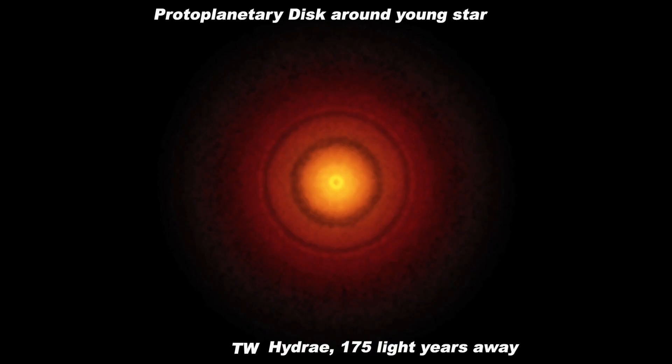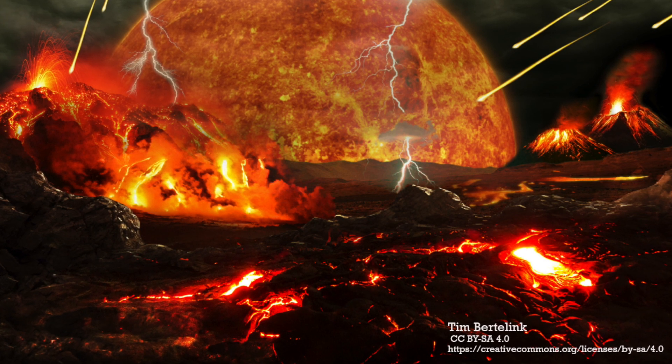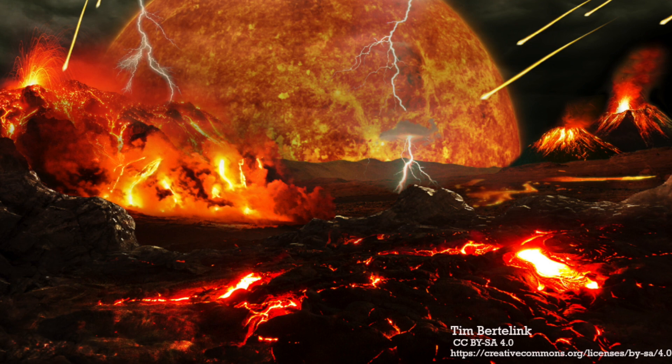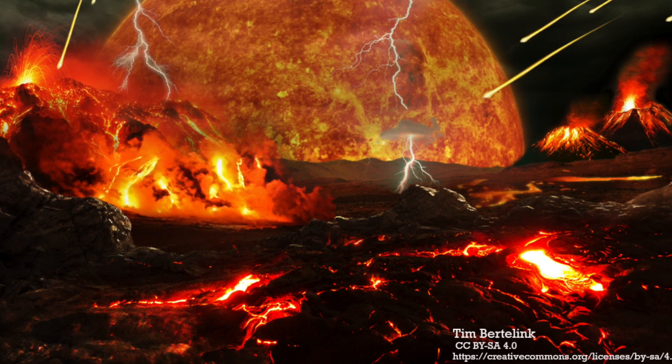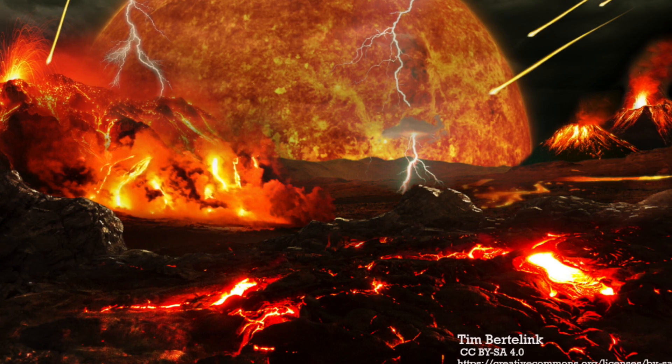Just as we are now becoming able to see examples of the formation of other solar systems newly forming in their protoplanetary disks. But for now, an artist's rendition can assist the imagination. In this portrait of the early Earth, we see a molten planet with volcanoes, lava flows, a less reflective surface, perhaps absorbing more of the young sun's energy.